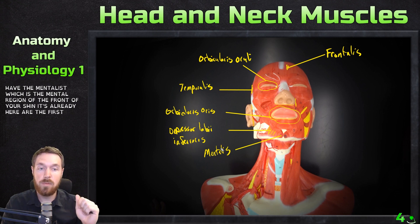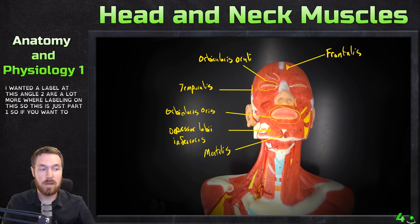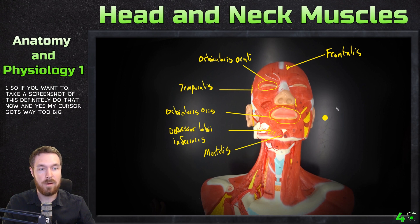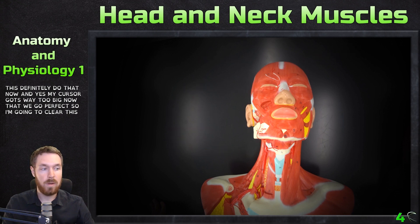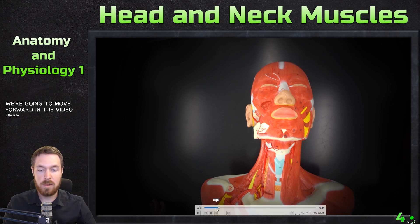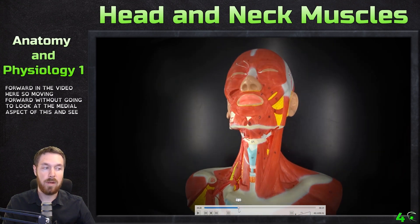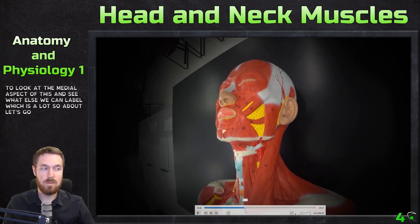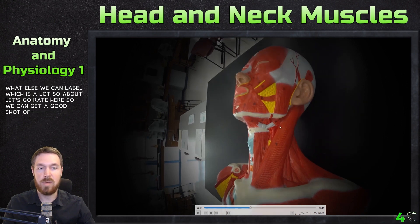So right here are the first ones I wanted to label at this angle. There are a lot more we're labeling on this, so this is just part one. Take a screenshot of this if you want. Now we're going to move forward and look at the medial aspect to see what else we can label. We can get a good shot of the trapezius in here as well.